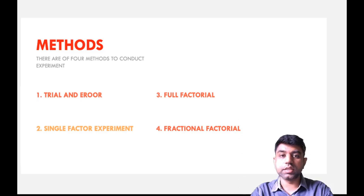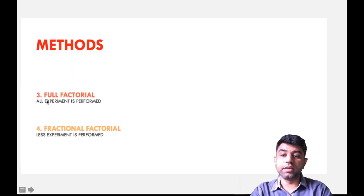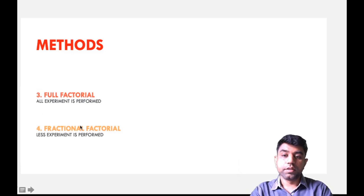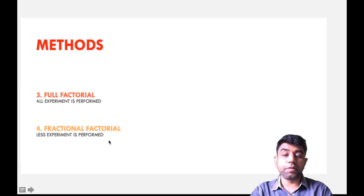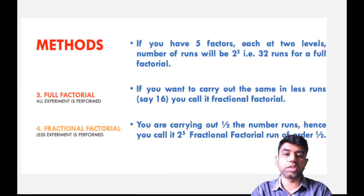So let's understand the concept of these last two methods. In the full factorial method we will perform all the experiments — that is the main concept. In the case of the fractional factorial experiment we will perform fewer experiments and still get the desired result.